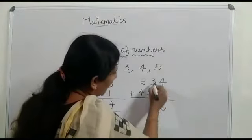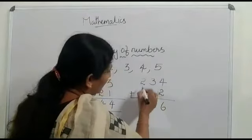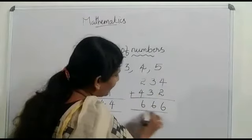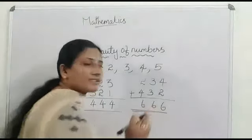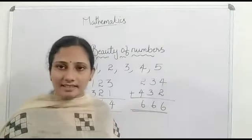4 plus 2, 6. 3 plus 3, 6. 4 plus 2, 6. What is the answer? 6, 6, 6. 666 is the answer.